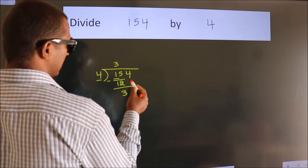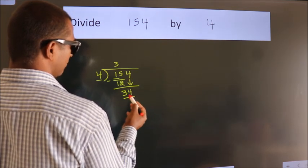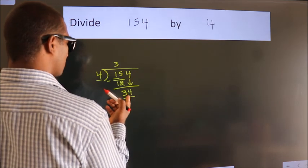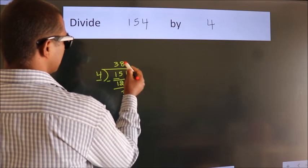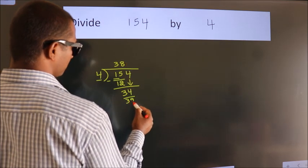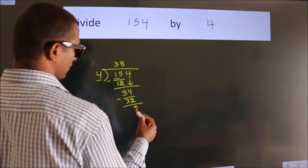After this, bring down the beside number, so 4 down, making 34. A number close to 34 in the 4 table is 4 eights, 32. Now we subtract and get 2.